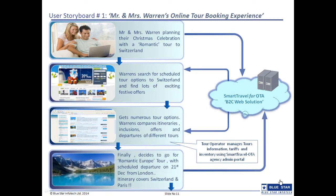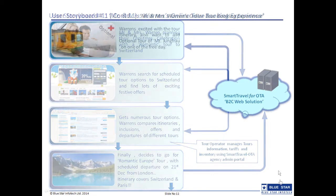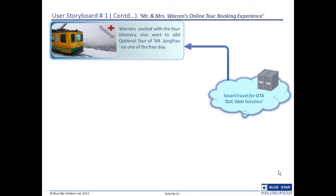After having made all the comparisons, Mr. and Mrs. Warren finally decide to opt for a Romantic Europe tour that departs on 21st December from London, and the itinerary includes Paris along with Switzerland. While going through the itinerary, the Warrens notice they have one free day during the tour, so they decide to add an optional tour to Mount Jungfrau.